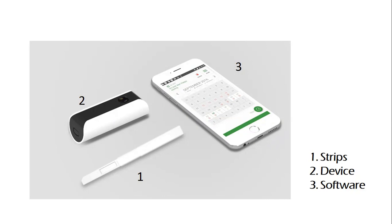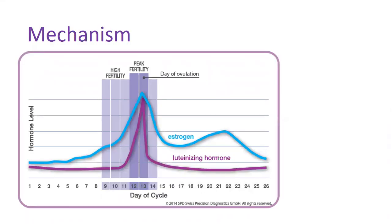Then we have to provide information, and based on that information and the test results, we will get the details of fertile and non-fertile. Looking at the working mechanism: estrogen and LH hormones tell us the results of fertile and non-fertile.